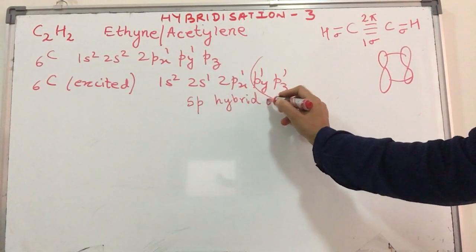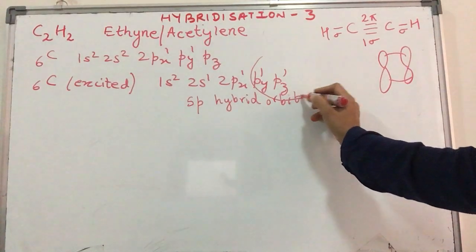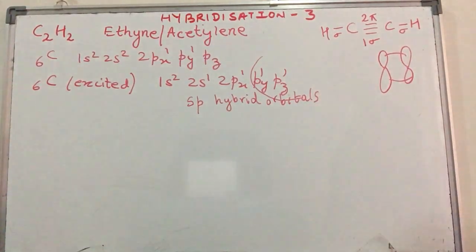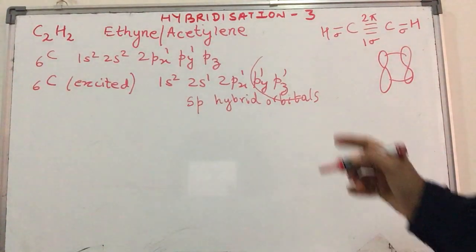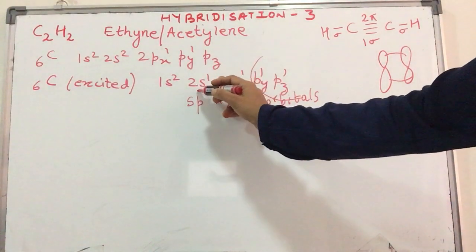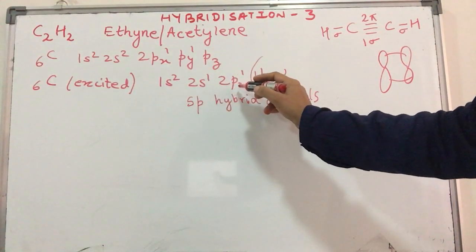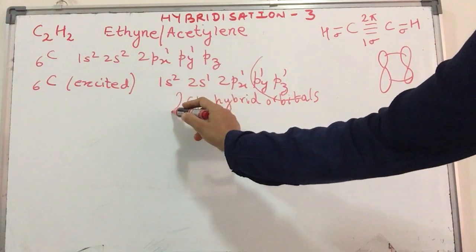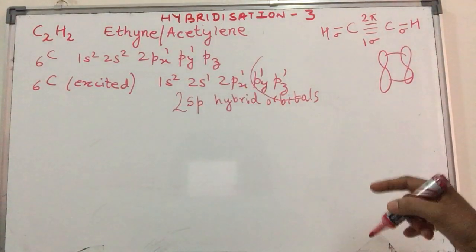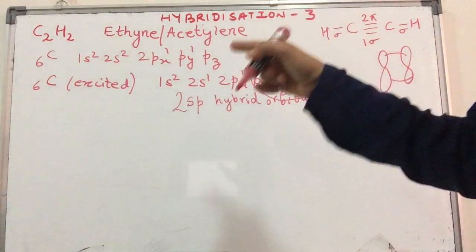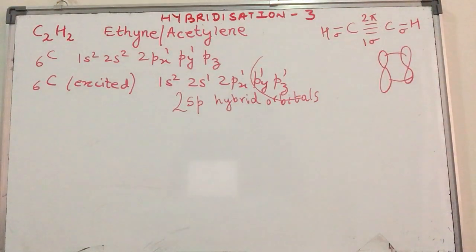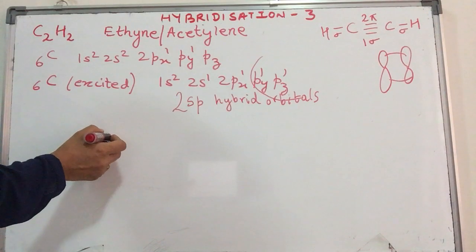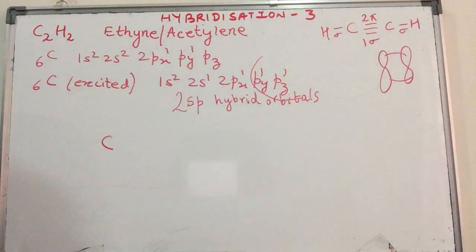How many of such orbitals will be formed? If you have seen the previous 2 videos, you should be able to answer. We have 1 of s and 1 of p participating in hybridization, so in all we will have 2 sp hybrid orbitals for each of the carbon atoms. Now 2 sp hybrid orbitals means they will align themselves in such a way that they are maximum distance apart from each other.